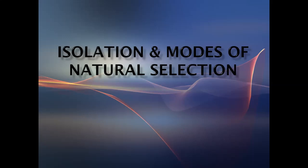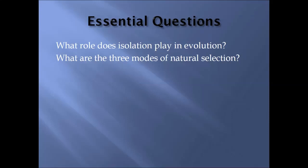As we go through today, let's take a look at our essential questions. We'll start with: what role does isolation play in evolution? If you followed along in the previous example and looked at the activity over the pepper moths, you should have some of this already in mind. We're going to focus on what are the three modes of natural selection that allow for change in a species population based on the underlying genetics.